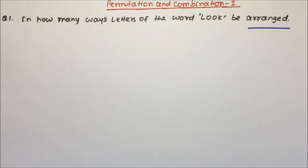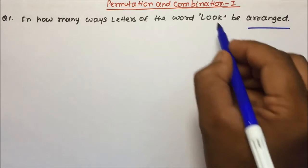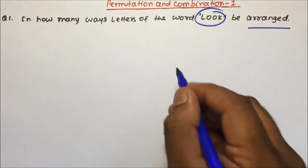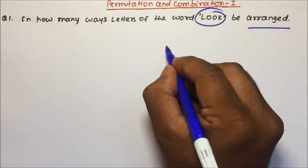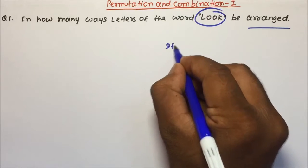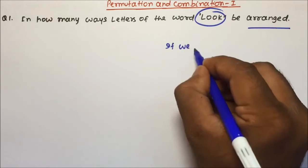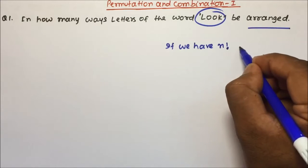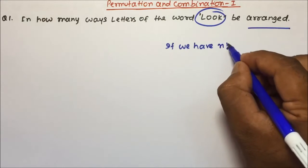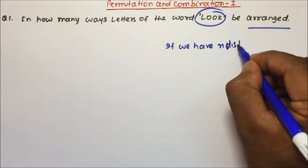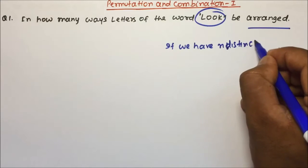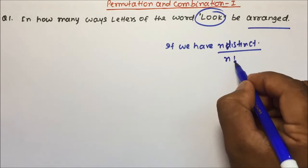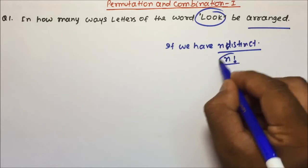Question number one: in how many ways can the letters of the word LOOK be arranged? Now, in the first video I told you — if we have n distinct letters, then we can arrange them in n factorial ways.